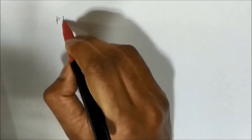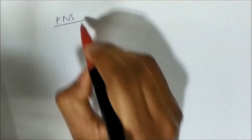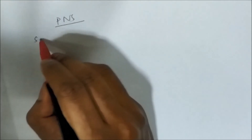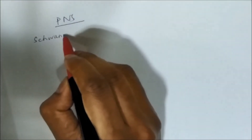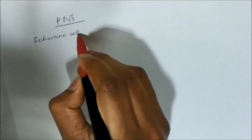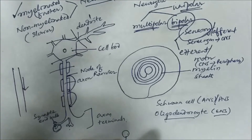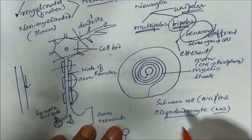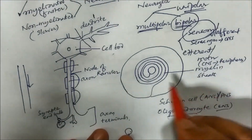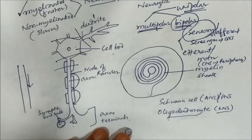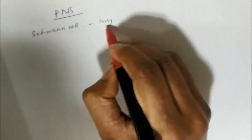In the PNS, there are two types of neuroglia. The first is the Schwann cell, which we have already discussed. It has a similar function to oligodendrocytes — it provides the myelin sheath.